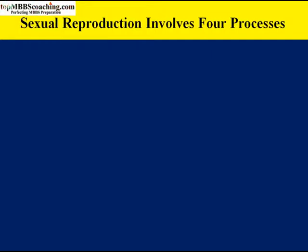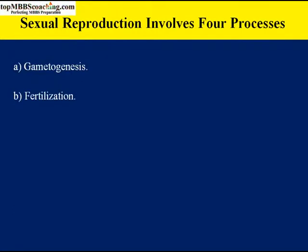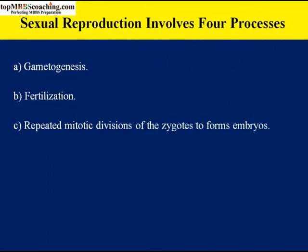Sexual reproduction involves four processes: first, gametogenesis — a biological process by which diploid or haploid precursor cells undergo cell division and differentiate to form mature haploid gametes. Second, fertilization — fusion of gametes in pairs forming diploid cells known as a zygote. Third, repeated mitotic division of the zygote to form embryos. Fourth, development — the growth of embryos into new individuals.